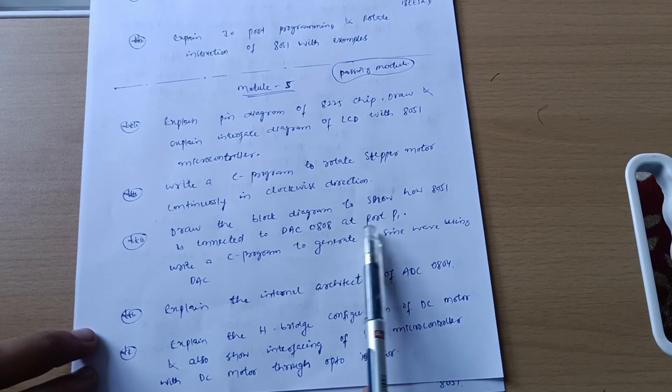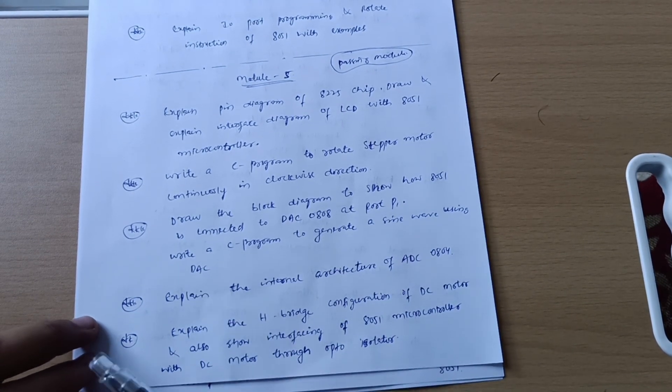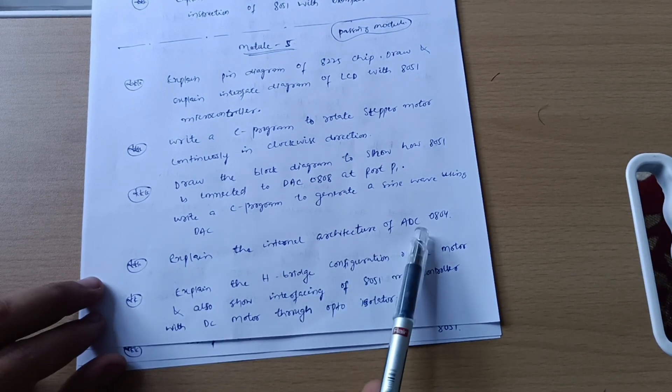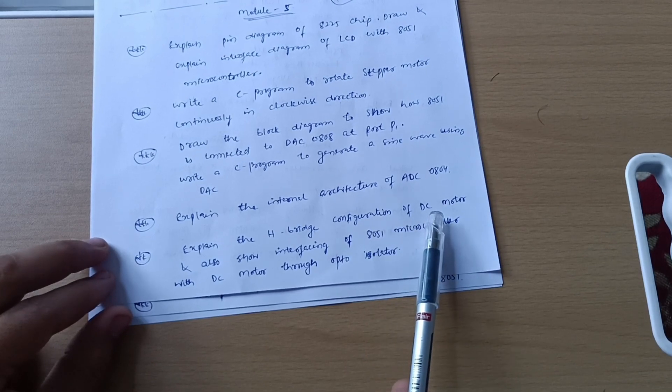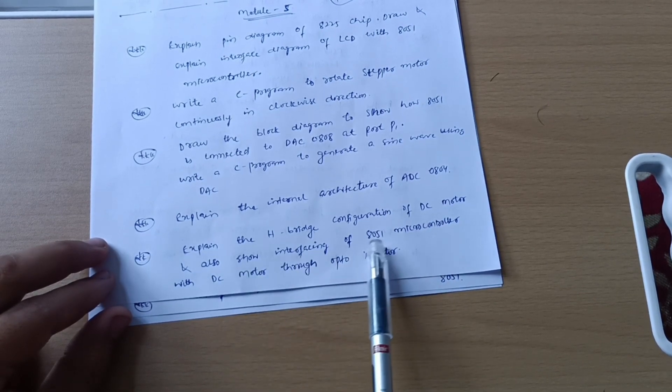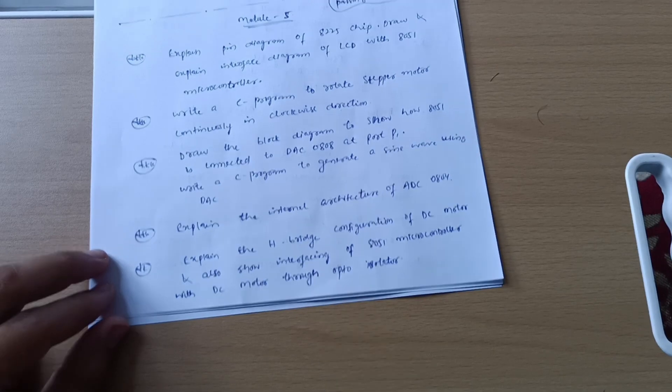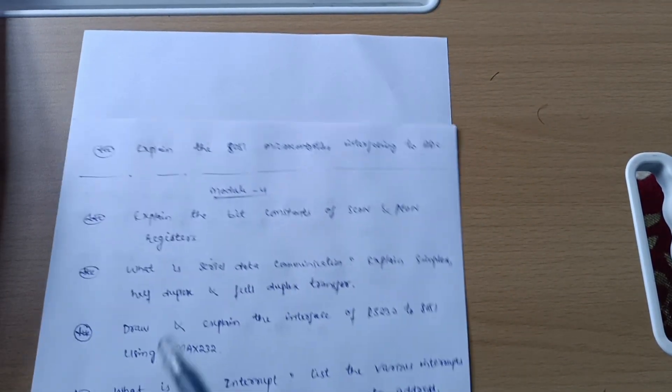Draw the block diagram to show how 8051 is connected to DAC0808 at port P1. Write a C program to generate a sine wave using DAC. Here we have explain the internal architecture of ADC 0804. Explain the H-bridge configuration of DC motor and also show interfacing of 8051 microcontroller with DC motor through opto-isolator.